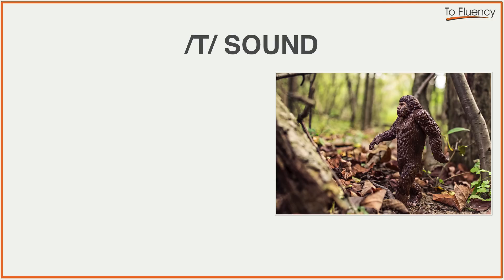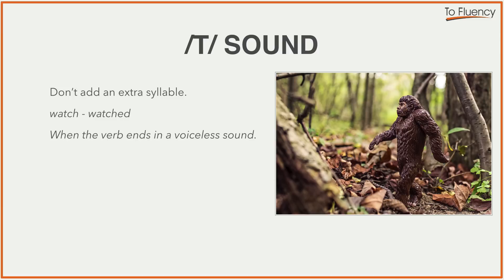The next sound is the T sound, and here we don't add an extra syllable. 'Watch' becomes 'watched.' There's no extra syllable — the T sound just goes onto the end of the verb. Now we use this sound when the verb ends in a voiceless sound, and a voiceless sound is when your vocal cords don't vibrate. I laughed really hard — so 'laugh' becomes 'laughed.'